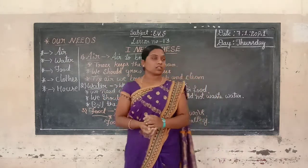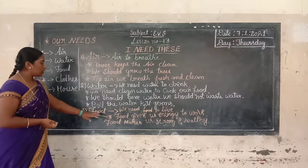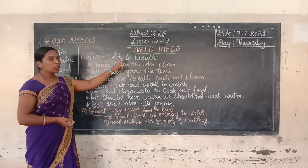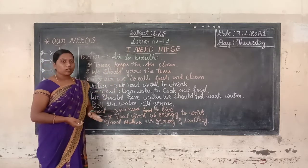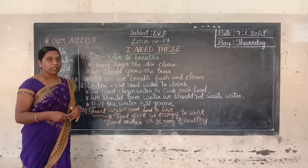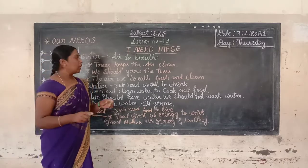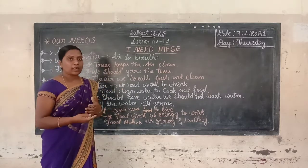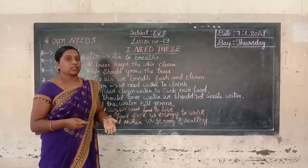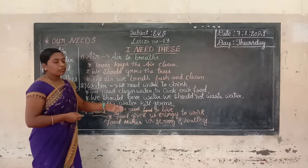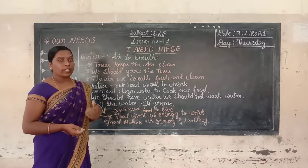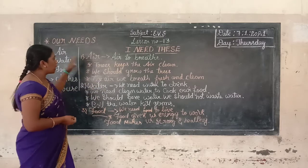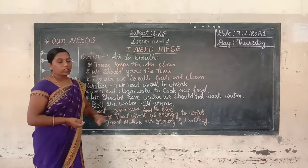Let me review the topics so far. Air — we always need air to breathe. Please keep the air clean. Without air, we cannot live. We should grow more plants and trees because we get air from plants. The air we breathe should always be fresh and clean. Then water — water is also one of the most important basic needs.